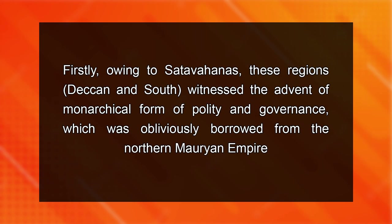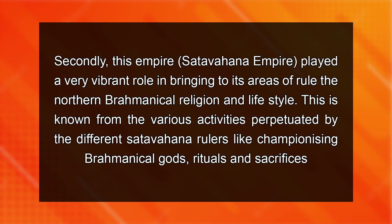Most of their inscriptions are found around Karle. The records of the Mahabhojas, on the other hand, occur on the western coast. The advent of Satavahanas on the political landscape of the Deccan and South India was significant in many ways. Firstly, owing to Satavahanas, these regions witnessed the advent, for the first time, of a monarchical form of polity and governance, obviously borrowed from the northern Mauryan Empire. Secondly, this empire played a very vibrant role in bringing northern Brahmanical religion and lifestyle to these areas, known from the various activities of the Satavahana rulers such as championing Brahmanical gods, rituals and sacrifices. Thus, it is correct to conclude that Satavahanas acted as intermediaries in taking further the North Indian traits to the Deccan and the South, a process that had started since the 6th century BCE.